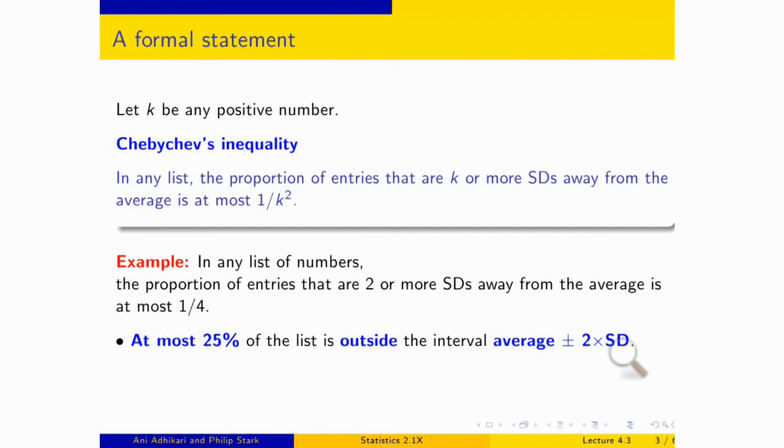By the way, I just use range there in the ordinary English sense, from here to there, not in the sense of a measure of spread. Well, so if at most 25% lie outside an interval, then inside the interval you have at least 75%. It's the opposite. And that is now telling you something. You look at the interval average plus or minus two SDs. So you stand at the average. You walk two SDs on either side. And you look at what percent of the data you have picked up in that interval. And that percent will be at least 75%, no matter what the list. That's the key.